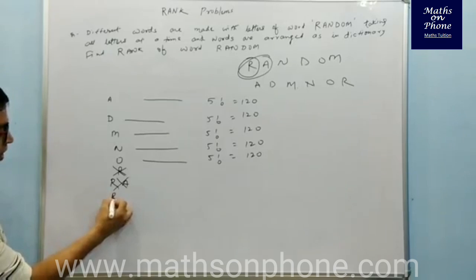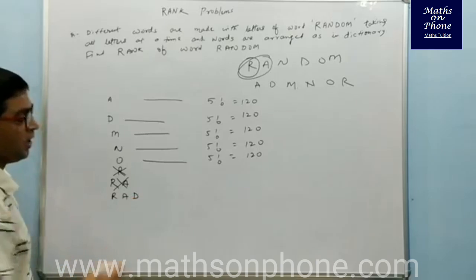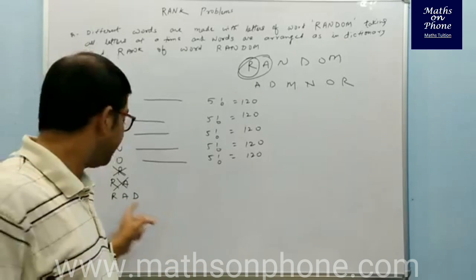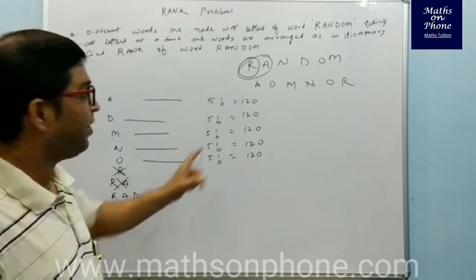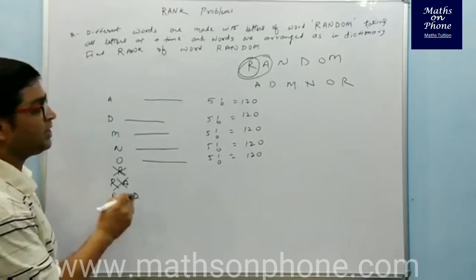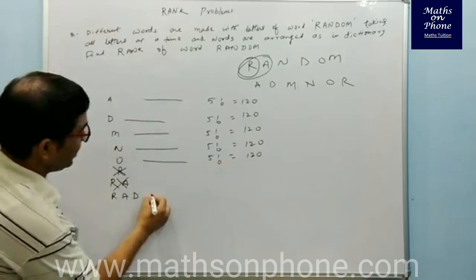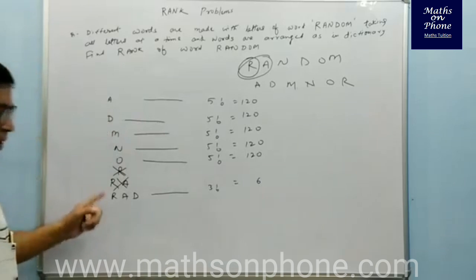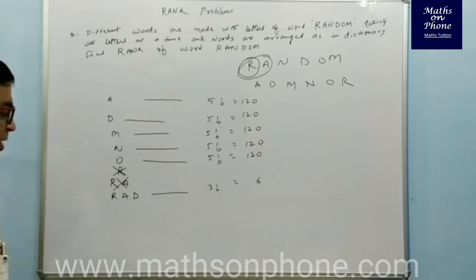Now I start with R, A, and then pick D from the remaining alphabetical order. The number of words starting with R-A-D: since R-A-D definitely falls before R-A-N, three letters are fixed in the first three places and the remaining three letters can be arranged in 3! = 6 ways.